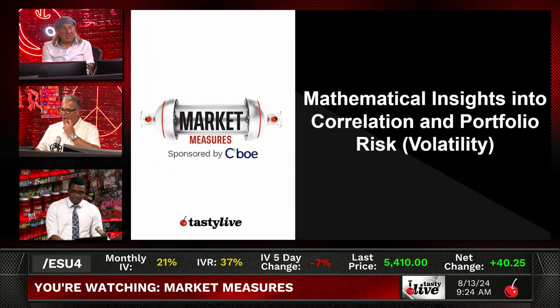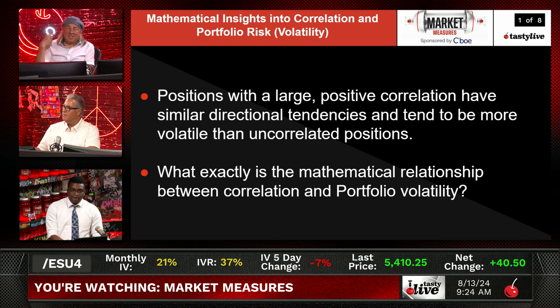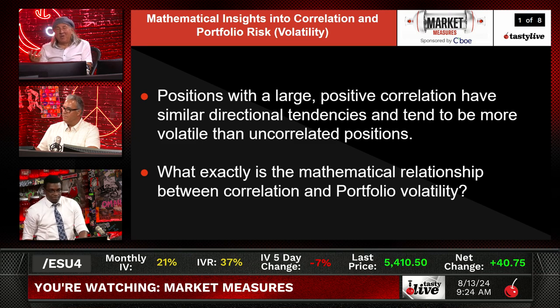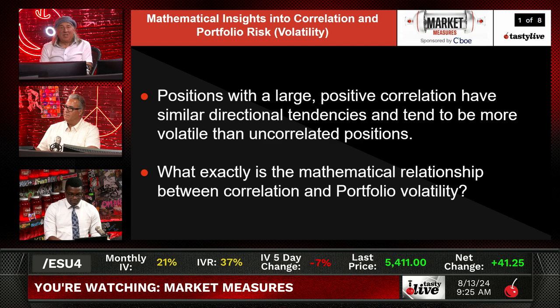We're going to look into mathematical insights into correlation and portfolio risk and volatility. Positions with a large positive correlation have similar directional tendencies and tend to be more volatile than uncorrelated positions. This is an extension of what I just talked about with Chris Vecchio — how bonds and stocks are inversely correlated right now, and the only way to protect yourself against a volatility explosion like last week was to have small positions and to be essentially as uncorrelated as possible. What exactly is the mathematical relationship between correlation and portfolio volatility?